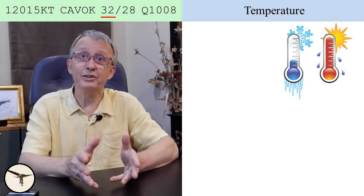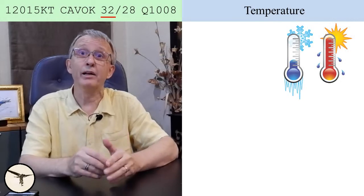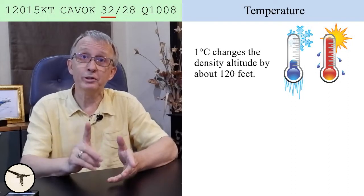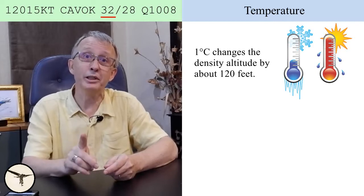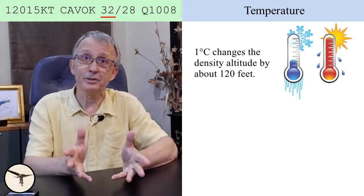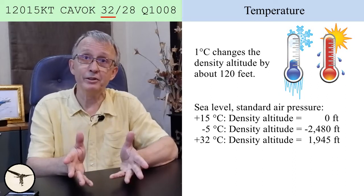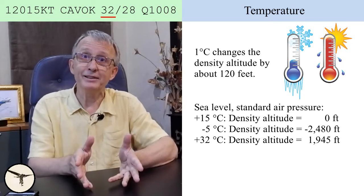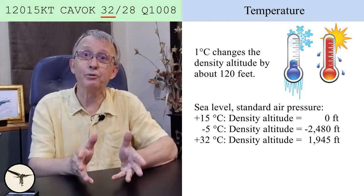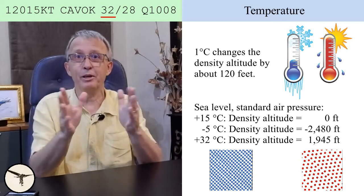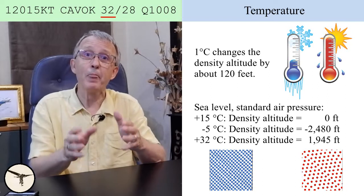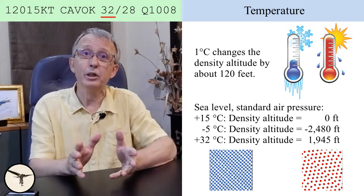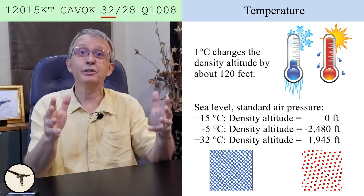The temperature is 32 degrees Celsius. A high temperature reduces the density of the air, and the engine and propeller get less air to work with, resulting in less thrust. A change in air temperature of 1 degree Celsius changes the density altitude by about 120 feet. At sea level on a standard day, temperature is +15°C and density altitude is 0 feet. When temperature is −5°C, density altitude is −2,480 feet — air molecules are packed densely together. When temperature is +32°C, density altitude is 1,945 feet — air molecules are less densely packed.